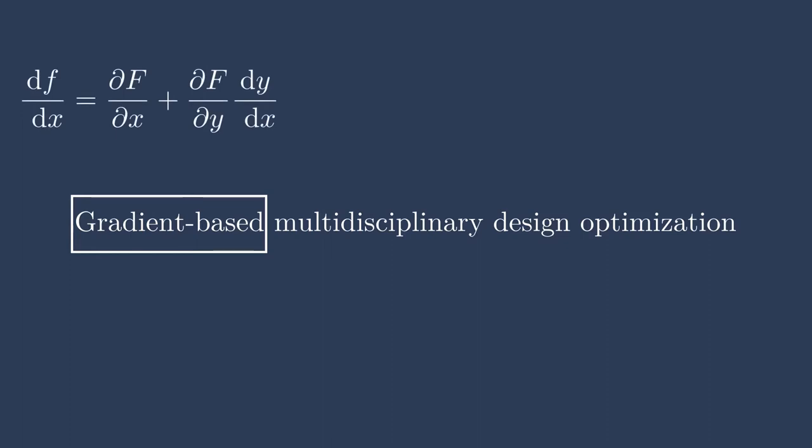Gradient-based means that we have some notion of the derivatives, or the gradients, of the design space. We know that if we move in one direction in the design space, the performance either gets worse or better. This is more information than a gradient-free method, which only knows the function value of the design space. I like to think about this as if you're trying to climb a mountain — it really helps to know which way is steeper. If you're blindfolded standing on some path, it may be unclear which direction to go. But if you can look around and see which way the mountain is, you can go in that direction. Gradients help tell you which direction to go in the design space to get the most out of your system.